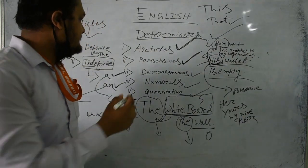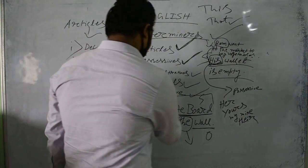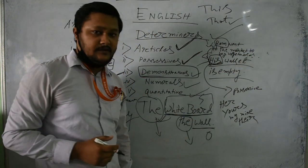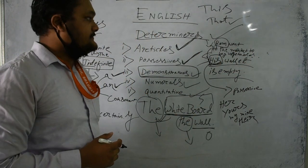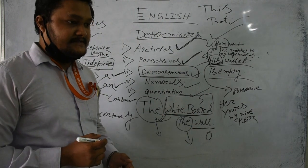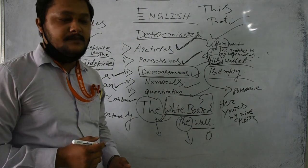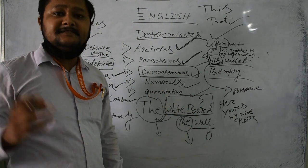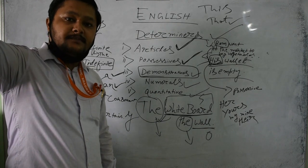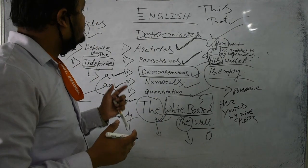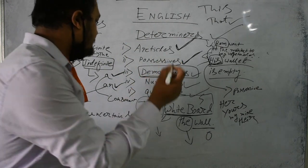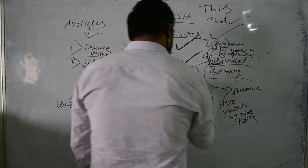The work of demonstratives is to particularly demonstrate a particular object. For example: 'This table is loaded with heavy objects and that chair is placed right beside the inverter.' This is the use of demonstratives.